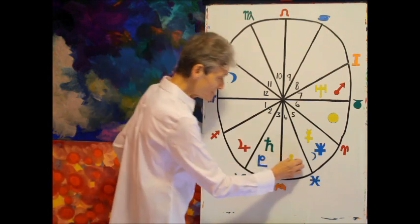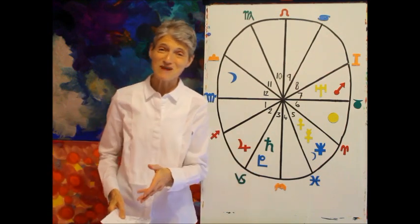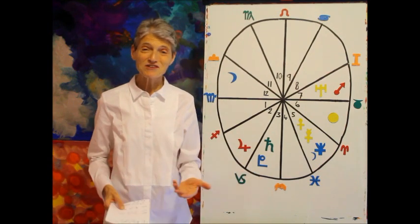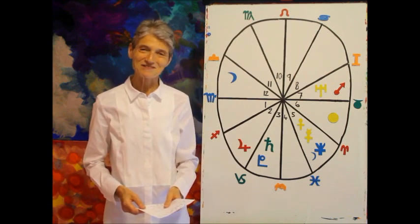On the 27th, Venus joining the party in the 5th house. And this could bring you a new romance. And Mercury goes direct on the 29th. So all stations go by the 29th of the month.